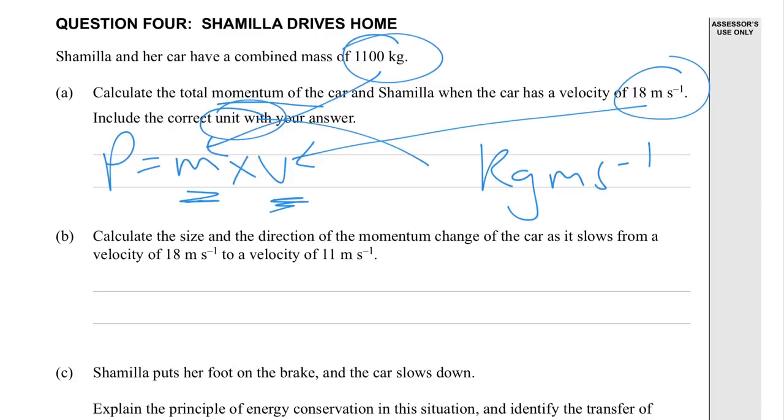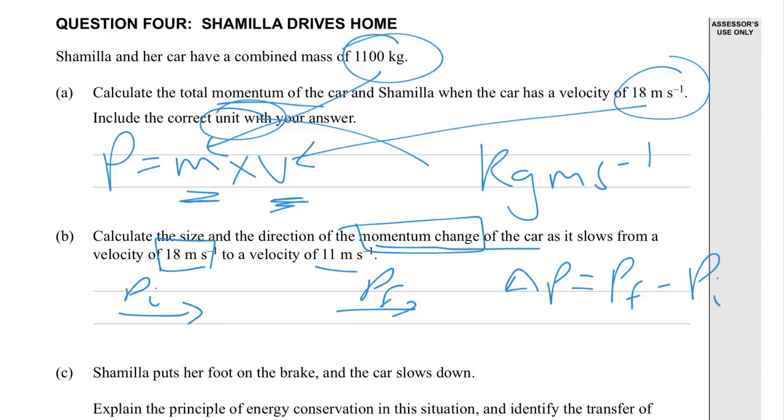B. Calculate the size and direction of the momentum change of the car as it slows from there to there. Going along in a straight line. So we've got our initial momentum, and then we've got a final momentum. So the change is the size and direction of the momentum change. Change in momentum is final minus the initial. Clearly we can see the initial is going to be higher than the final. So we're going to end up with a negative answer.